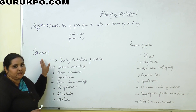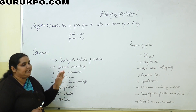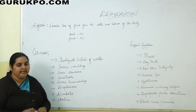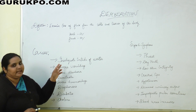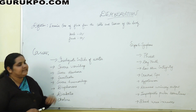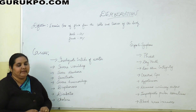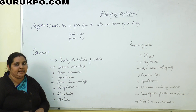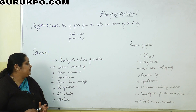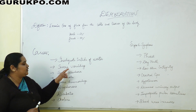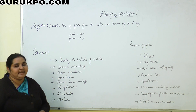The first cause is inadequate intake of water. If the person is not taking a sufficient amount of water, the body cells and tissues will be lacking. The second cause is severe vomiting — the person is losing fluid through vomiting, which leads to dehydration.